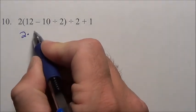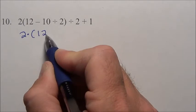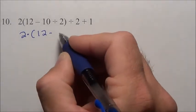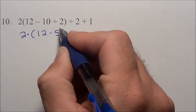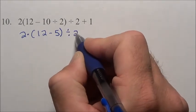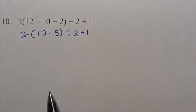So we have 2 times parenthesis, 12 minus 10 divided by 2 is 5, divided by 2 plus 1. Just doing one step at a time.